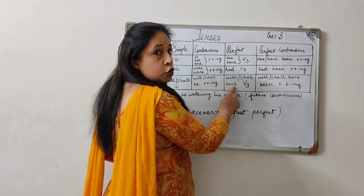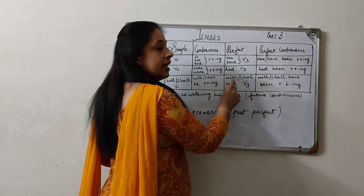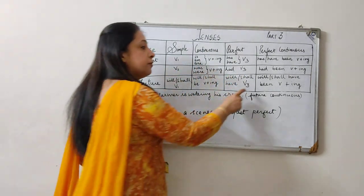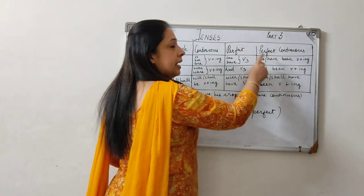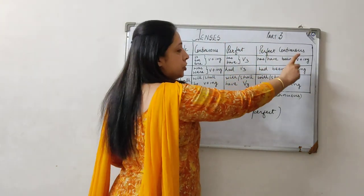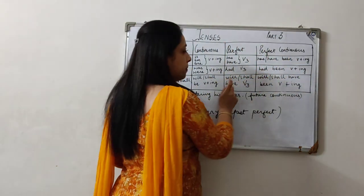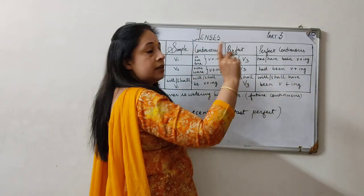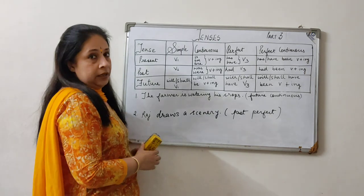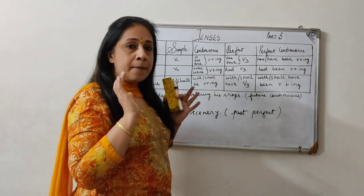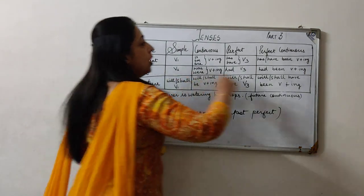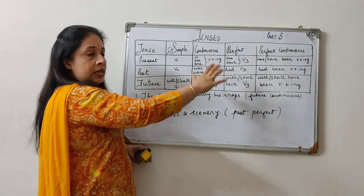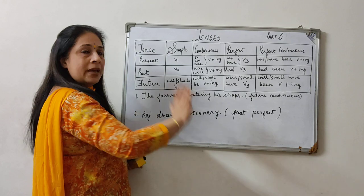In the future perfect tense, we have will, shall and have — 'will have' or 'shall have' is the future tense form of 'have' with verb third form. In future perfect continuous, we have will or shall, 'have' from future perfect, and ing from continuous — when the two are together we add a 'been' in between. This is the helping verb to make the sentence meaningful. So according to this, we have the table here. I will not rub it and we will do different questions.